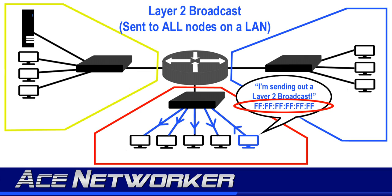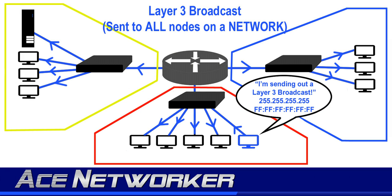The most commonly referred to type is Layer 3 broadcasts, which is typically what technicians and IT admins mean when they say broadcasts on a computer network. Layer 3 broadcast messages are meant to reach all hosts on a broadcast domain. These are at the IP address level and will have all host bits turned on as 1s. When subnetting, the broadcast address will again be the one with all 1s for the host bits of that subnet.